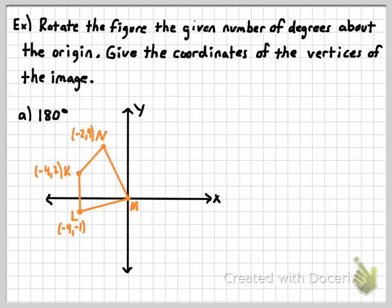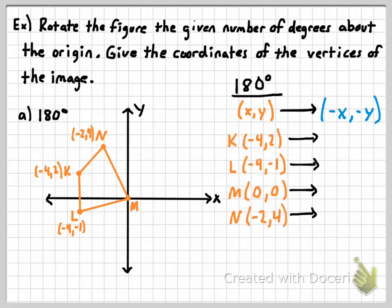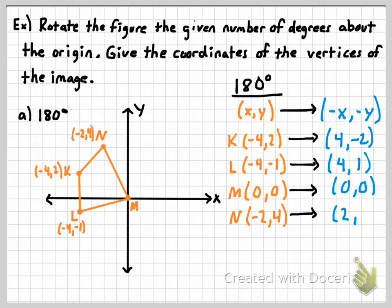Now let's use those patterns. I want us to rotate this figure 180 degrees about the origin and give the coordinates of the vertices of the image. We're simply going to apply the pattern: for 180 degrees, you change the signs of the x and y coordinates. So negative four, two becomes positive four, negative two. Applying the same pattern, we get positive four, positive one for L prime; zero, zero for M prime; and positive two, negative four for N prime.